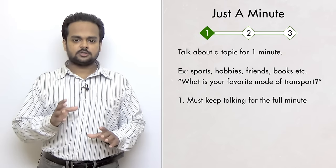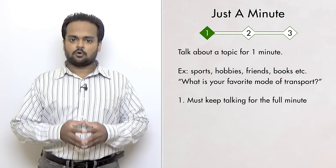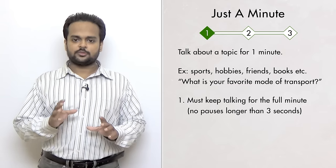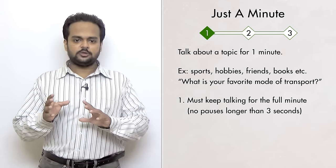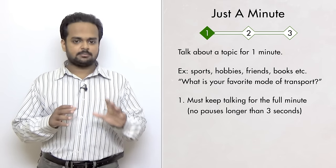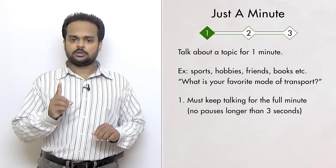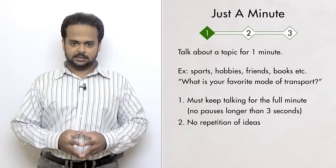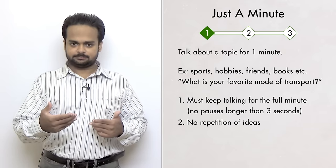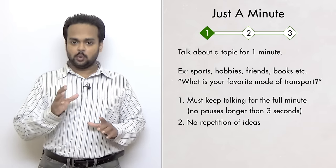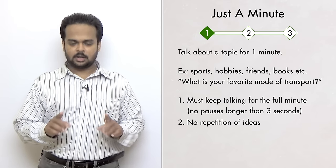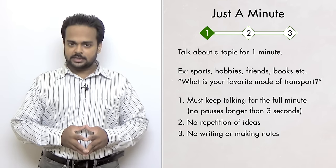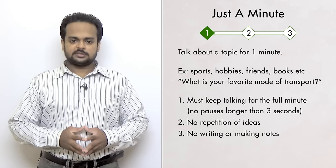The first rule is that you cannot stop speaking. You must talk for the full minute. If you have to pause to catch your breath, it's OK. But you cannot pause for more than three seconds. Even if you say nonsense or you say something unrelated to the topic, it doesn't matter. You're just going to keep talking. So that's rule number one. Rule number two is you cannot repeat the same ideas. That means you can't just say the same things over and over and over again. This isn't pronunciation practice, it's fluency development. So no repetition of the same ideas. And rule number three is no writing. You cannot make any notes while you are speaking. You must only concentrate on speaking. These are just the three rules.